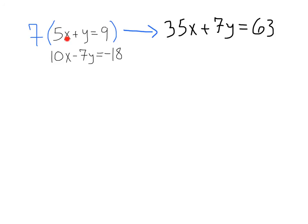So, what I'm going to go ahead and do is I'm going to multiply this top equation by 7. That's going to give us 7 times 5x, 35x, plus 7 times y, 7y, equals 7 times 9, or 63. Now, let's take our new equation, combine it with our old one, and let's see if we can do anything from there.